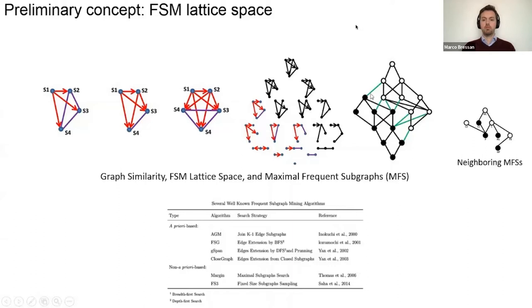After 2006, researchers realized there is a smaller subspace called margin, labeled by the green color connections. We can only enumerate those maximal frequent subgraphs that if you extend one edge, you can find an infrequent subgraph by neighboring MFS rules. By this way, we can avoid most of the smaller sub-frequent subgraphs.